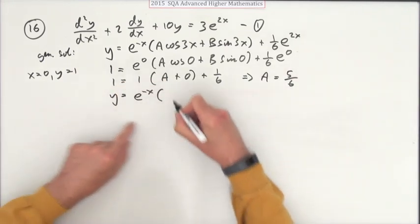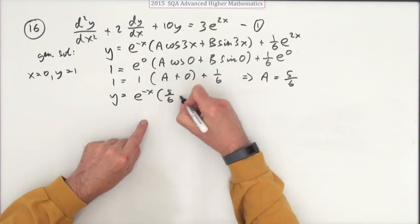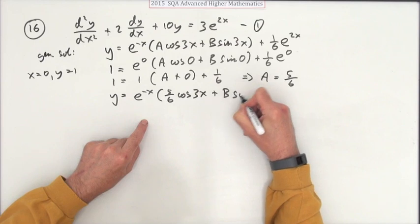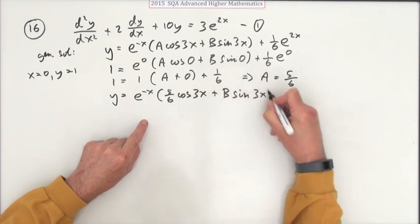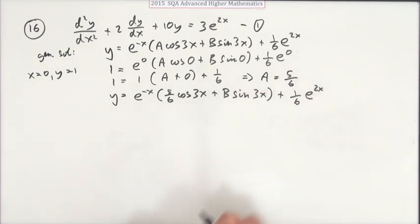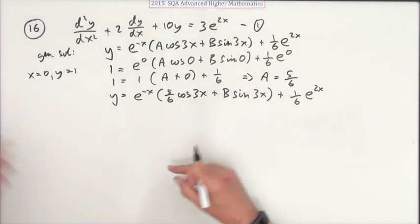e^(-x) times 5/6 of cos 3x. I don't know what B is yet, plus B sin 3x, plus 1/6 of e^(2x). What was the other condition? The derivative. That's just what you don't want with this big product.